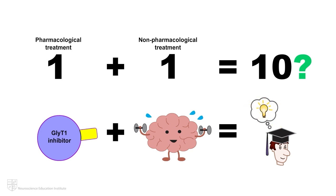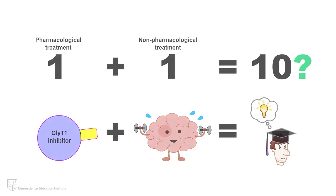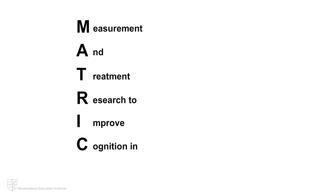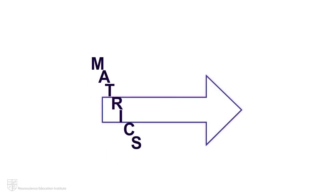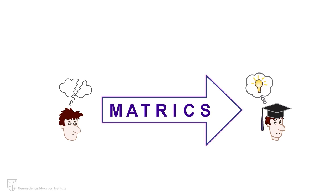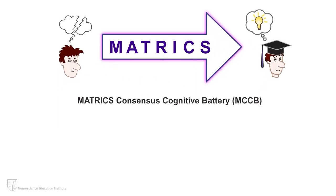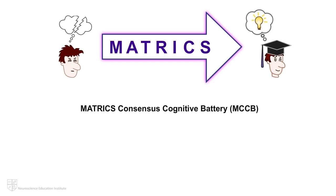How is cognition measured in the studies of GlyT1 inhibitors and other therapeutic strategies for ameliorating CIAS? Recall that in Part 1 of this animation series, we discussed the NIMH Measurement and Treatment Research to Improve Cognition in Schizophrenia, or MATRICS, initiative. It is therefore not surprising that the gold standard for measuring cognition in schizophrenia recommended by the FDA is the MATRICS Consensus Cognitive Battery, or MCCB.